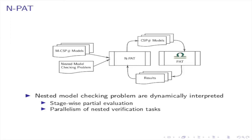NPAT evaluates the result of a nested model checking problem similar to how a dynamic interpreter evaluates an expression. The nested model checking problem is first parsed and a corresponding abstract syntax tree is built, using a library of combinator parsers. Next, the resulting abstract syntax tree is recursively evaluated in a bottom-up fashion. It applies statewise partial evaluation in order to efficiently evaluate expressions. Additionally, since verification tasks are independent from one another, they can be evaluated in parallel, which greatly speeds up the overall verification.